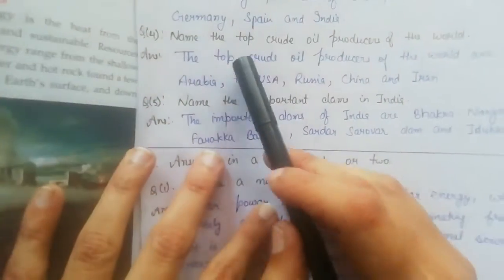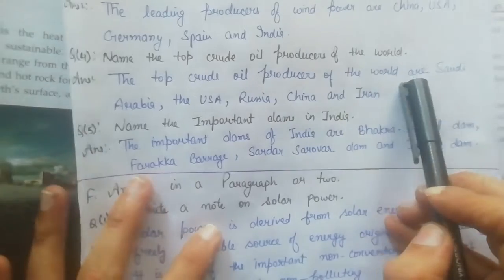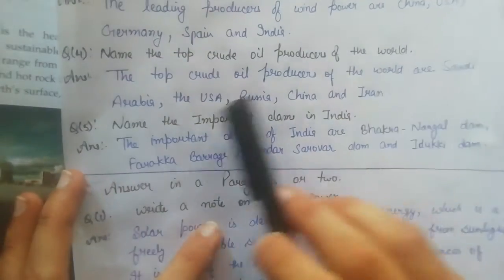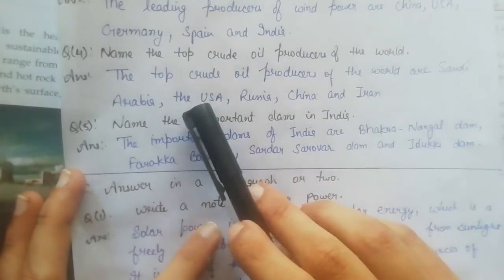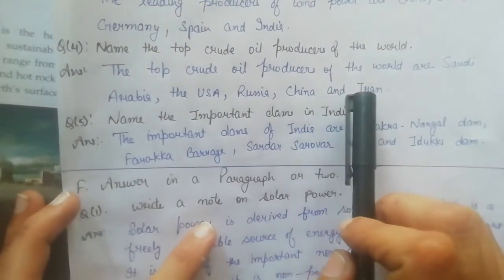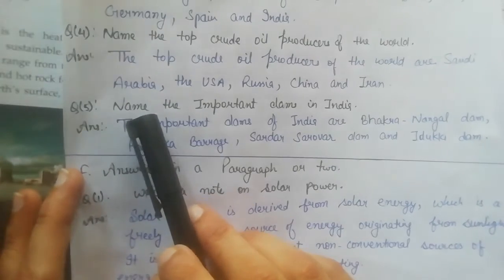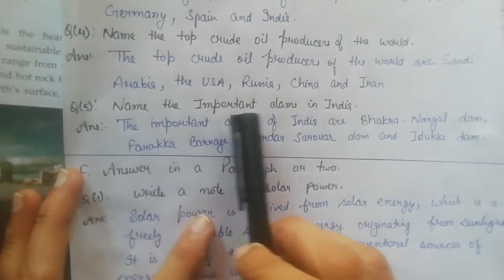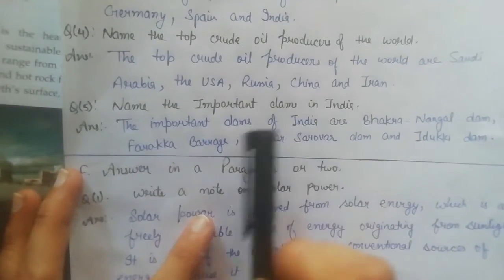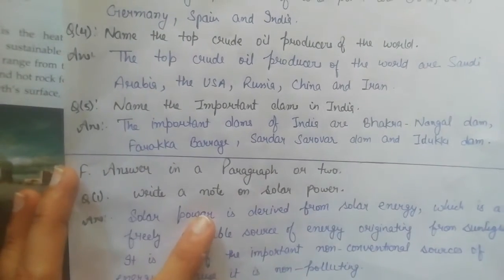You will write the answer as: the top crude oil producers of the world are Saudi Arabia, the USA, Russia, China, and Iran. Now the fifth question: name the important dams in India.